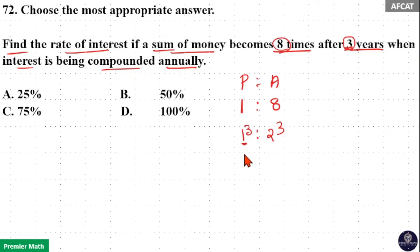Now you can see 1 part is the principal for 1 year and 2 part is the amount for 1 year. So 1 becomes 2 at the end of 1 year. This is principal and this is amount.